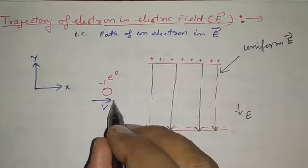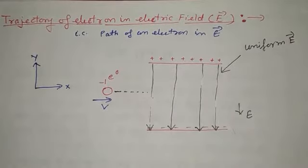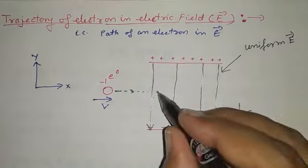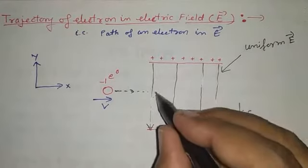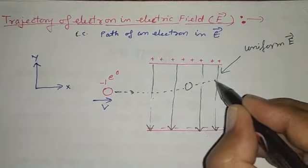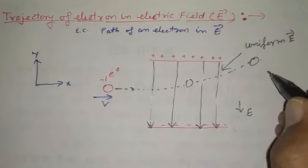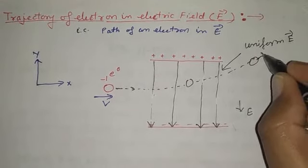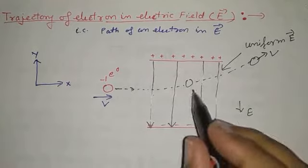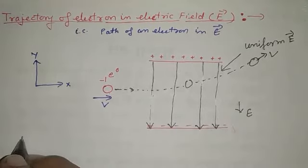When it enters, this electron traveling along it, a force experiences. Due to this force, it followed a path in this way, in this direction. When enter in it, this electron experiences electric force.